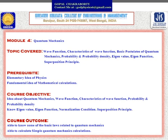The topics that we are going to cover are: wave function, characteristics of wave function, basic postulates of quantum mechanics, probability and probability density, eigenvalue and eigenfunction, and lastly the superposition theorem. These topics are under Module 4, which is another new module under the chapter Quantum Mechanics.